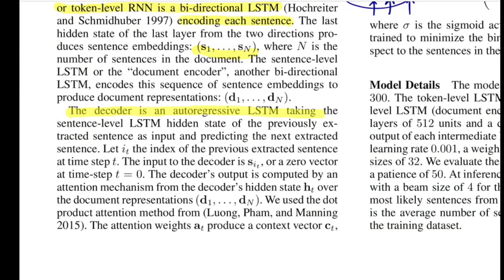The decoder is an autoregressive LSTM that takes the sentence-level LSTM hidden state of the previously extracted sentence as input and predicts the next extracted sentence. Similar to sequence-to-sequence in machine translation, at every step the decoder takes the previous hidden state and previous output, but here it outputs a sentence rather than a word. Cross-entropy loss is calculated against the actual sentences that should be part of the extractive summary.